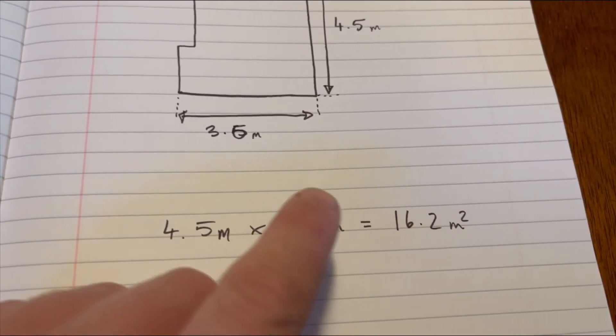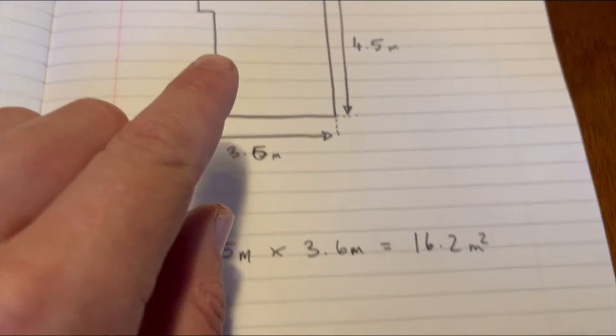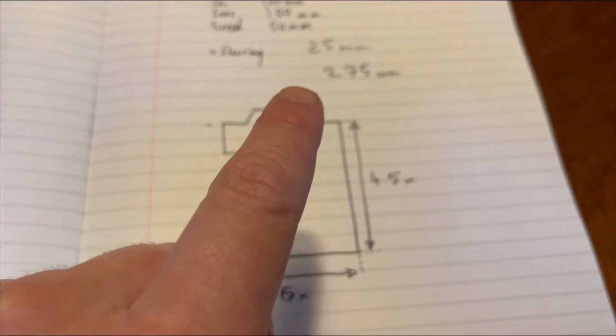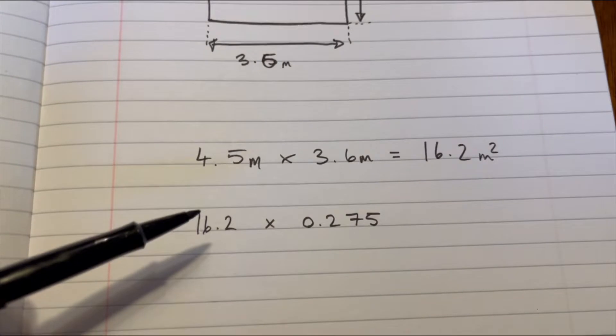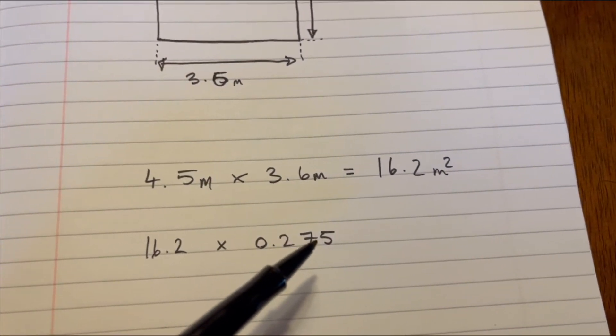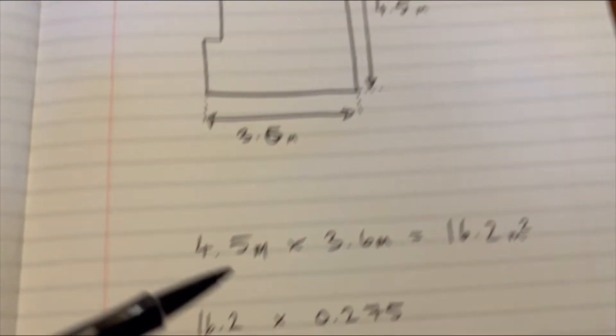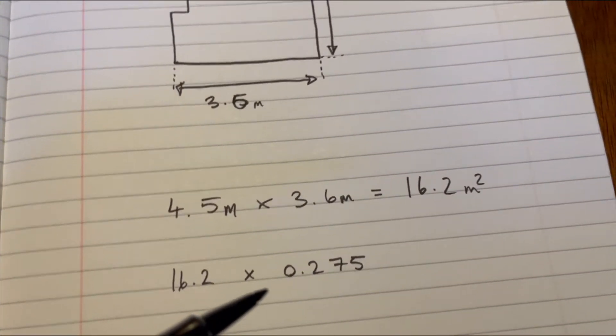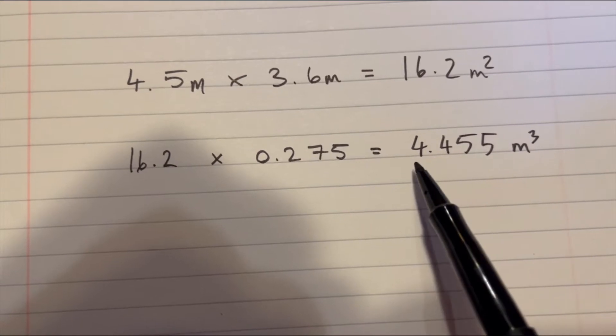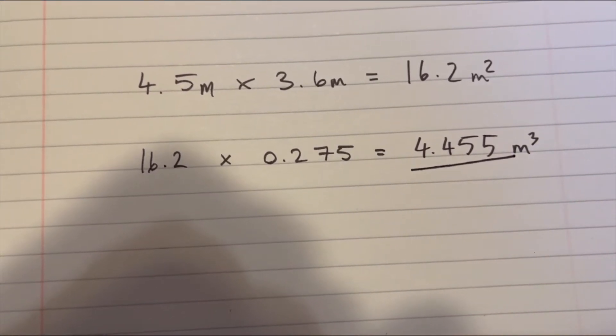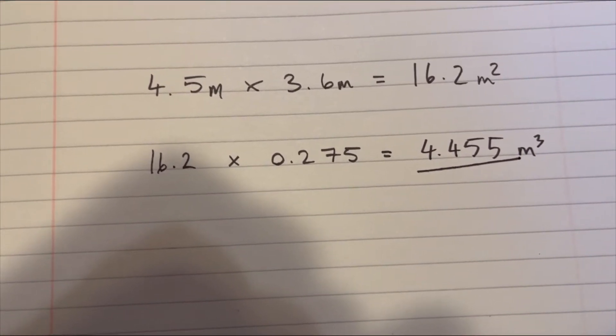So if I were then to work out what the volume of stuff that I'd have to dig out would be to get down to the level that we need, 16.2 times 0.275 because I've converted the millimeters into meters. That's going to mean we've got nearly four and a half cubic meters of stuff to dig out.